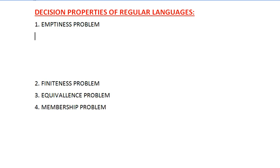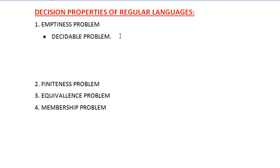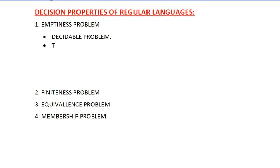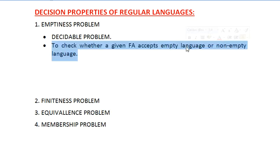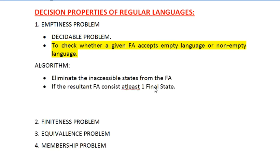Now let's start with the emptiness problem. The emptiness problem is a decidable problem — this is the first important point. The emptiness problem checks whether a given finite automaton accepts an empty language or a non-empty language. Since it is a decidable problem, an algorithm exists for it.